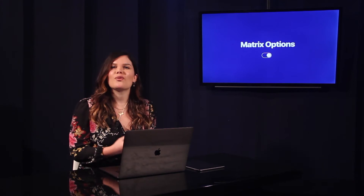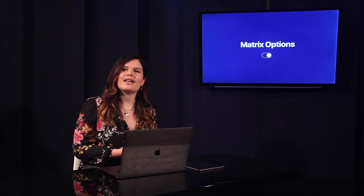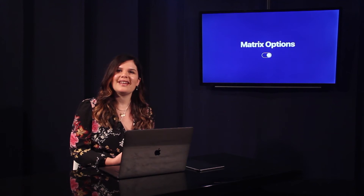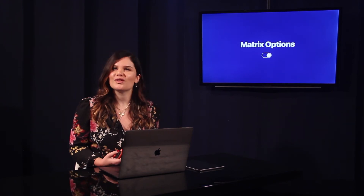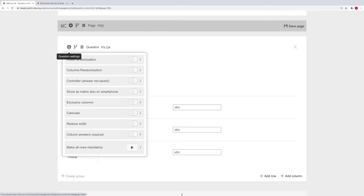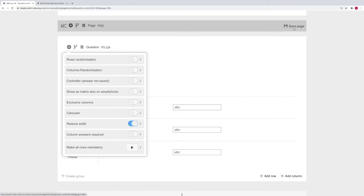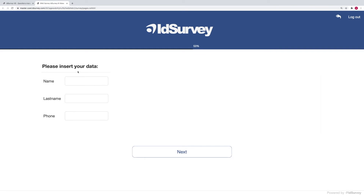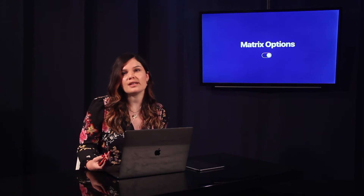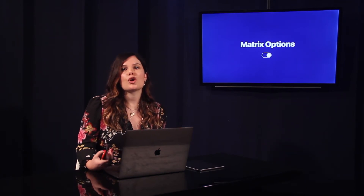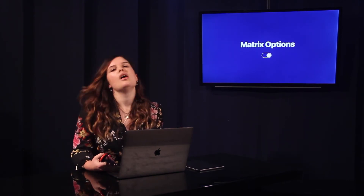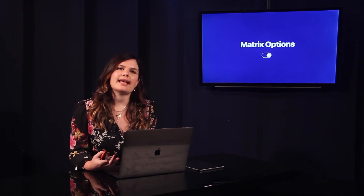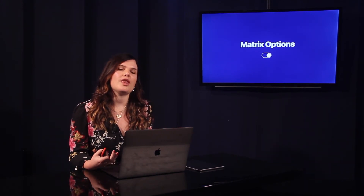This allows you to create custom matrices for the most peculiar needs. For example, you can make rows optional and columns mandatory to create an inverted matrix. In addition to changing the behavior of the matrix, there are also options to change the layout: reduce the width to create forms, show matrix questions on mobile devices with small screens, or show one line at a time as if there were many separate questions — all without using scripts.